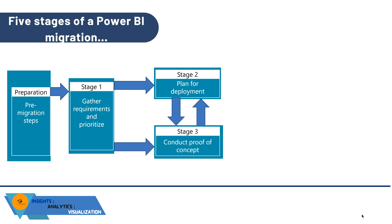To summarize: first, focus on the pre-migration steps covered in Episode 2. Then, in Stage 1, gather all requirements related to reports, dashboards, datasets, dataflows, and other content in your legacy system to be migrated to Power BI Services. Stages 2 and 3 can be worked in parallel — while planning deployment in Stage 2, you can simultaneously start conducting the proof of concept in Stage 3.